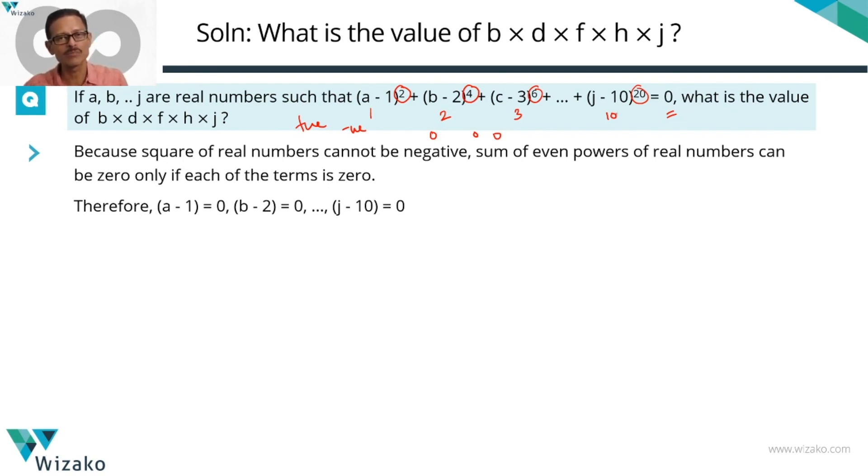So the only way, with the powers being even, the sum of these 10 numbers can equal zero is when each of these expressions is zero, which means (a - 1)² = 0, (b - 2)⁴ = 0, (c - 3)⁶ = 0, so is (j - 10)²⁰ = 0, which translates to the fact that a - 1 = 0, b - 2 = 0, j - 10 = 0.